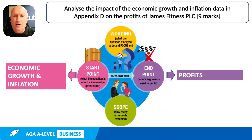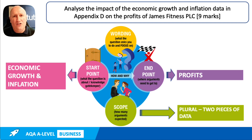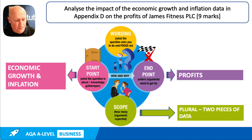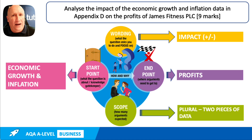This is a good question. You need to think about how many points to develop. The examiner specifically asked you to consider the impact of two pieces of data from Appendix D. So whilst you could write about it all in one big point, I think the obvious approach is to deal first with economic growth data and then with inflation data — effectively treating them as separate points. You could have two negative, two positive, or one negative, one positive impact on profits.